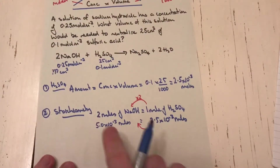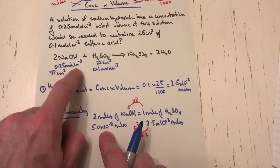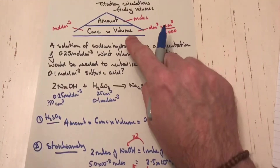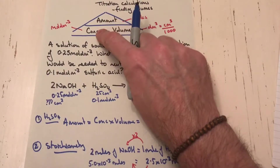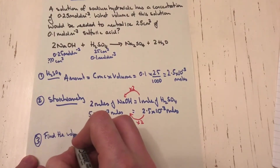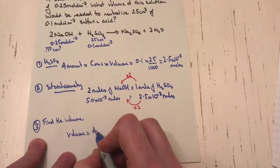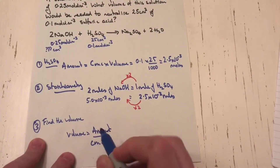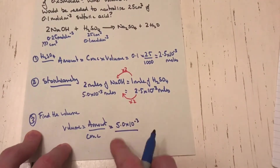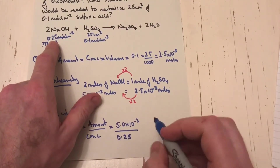Using stoichiometry I've found the moles of NaOH. I know the moles and the concentration, so step 3 is to find the volume. From the triangle: volume = amount ÷ concentration. The amount is 5.0 × 10⁻³ mol and the concentration from the question is 0.25 mol/dm³.